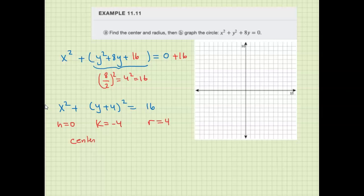So the center is at 0, negative 4, and the radius is 4. Okay, so let's graph that.